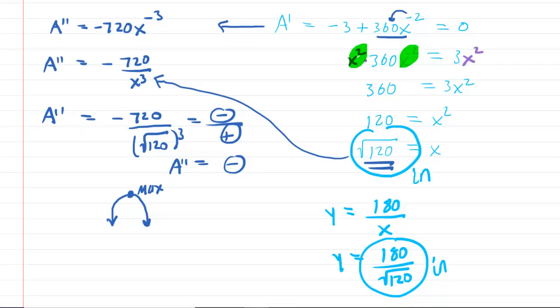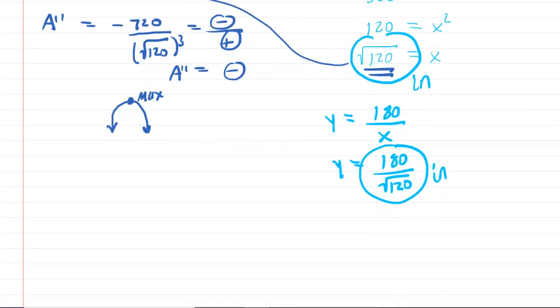We could, if we needed to, if our teacher required us to simplify these values. So maybe we'll just do that as an exercise. X equals the square root of 120. You could rewrite that as the square root of 4 times the square root of 30. And then the square root of 4, of course, is 2. So you have 2 root 30.